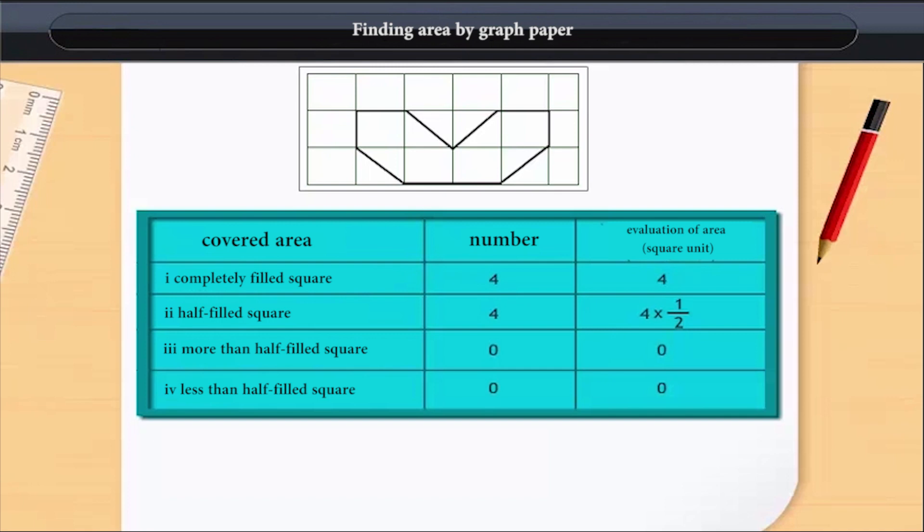Area of a complete square has been taken as 1 square unit. If we count completely half squares, we can assume it to be 1/2 square unit area. We can leave the portion which covers the square less than half. If more than half square has been covered in a portion, we assume it to be a complete square.